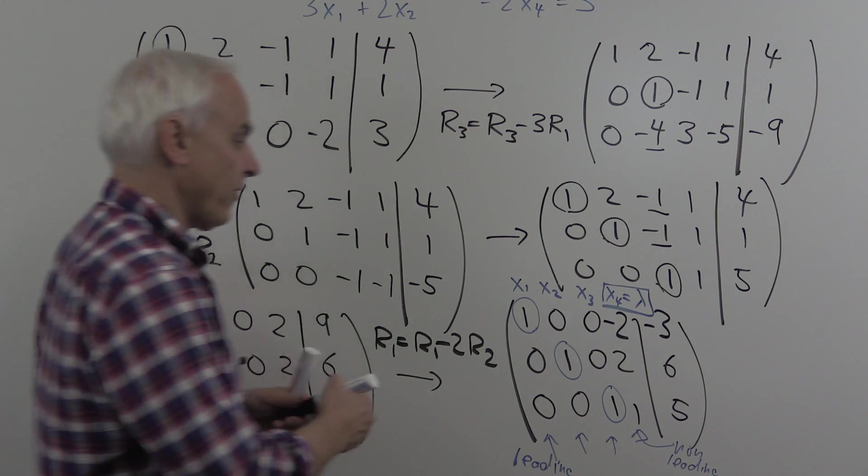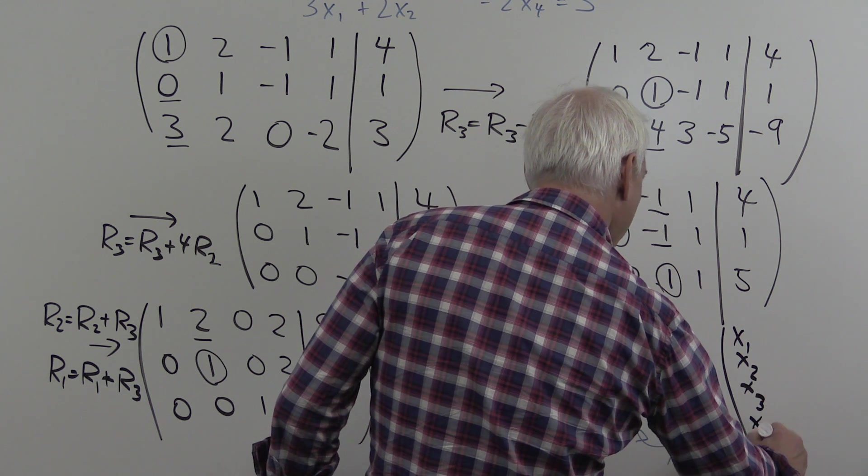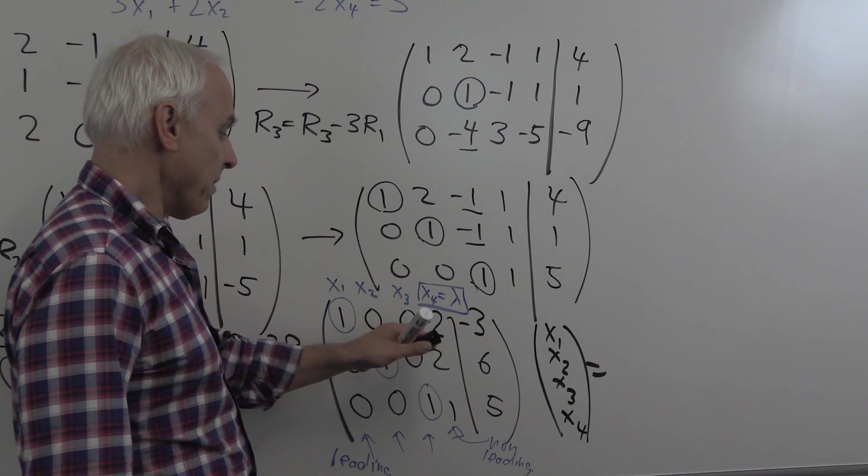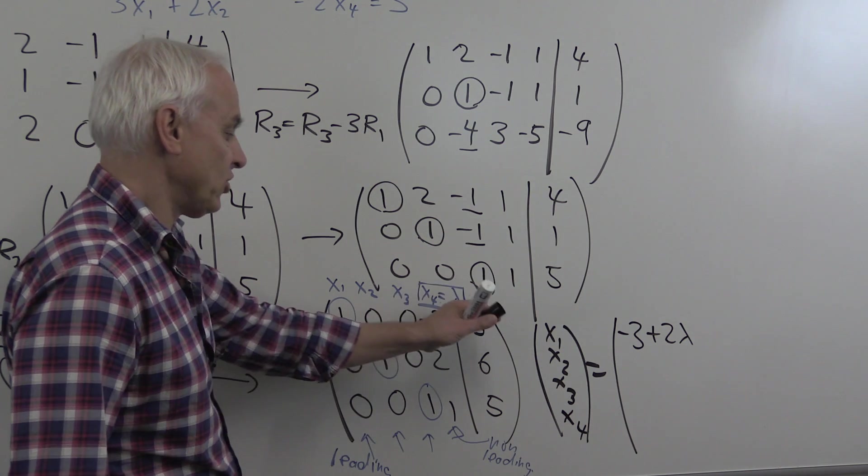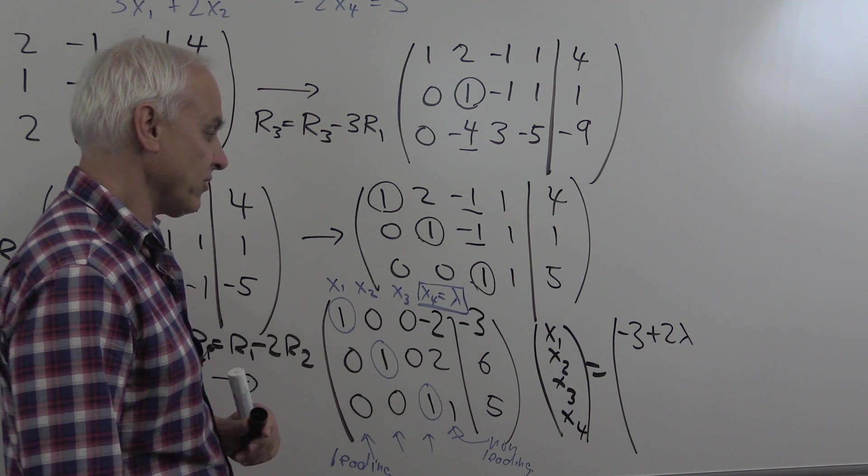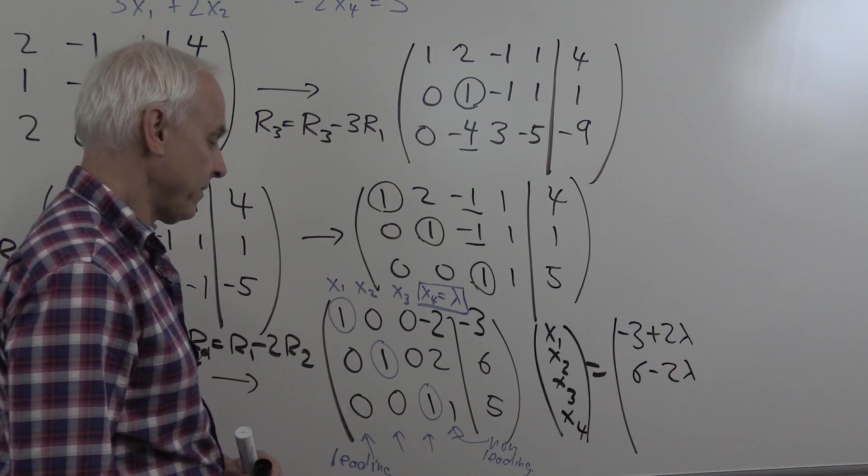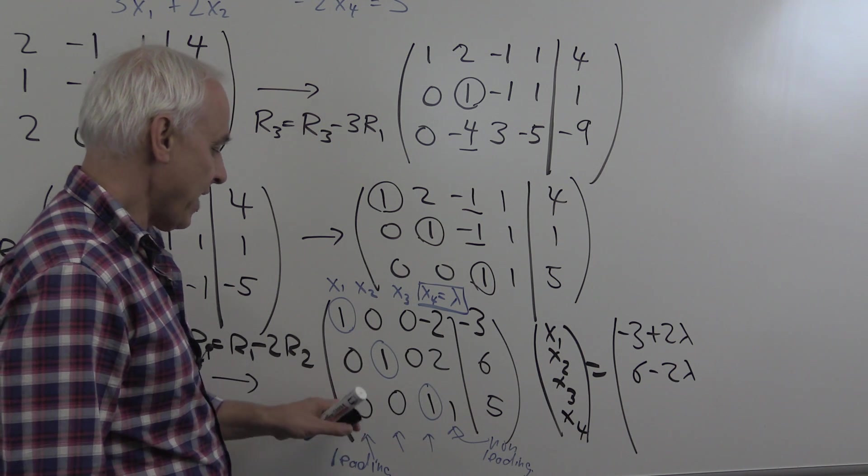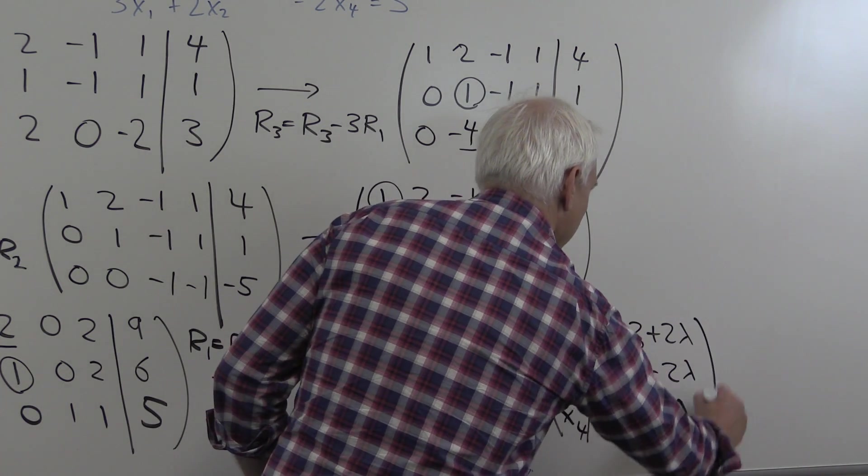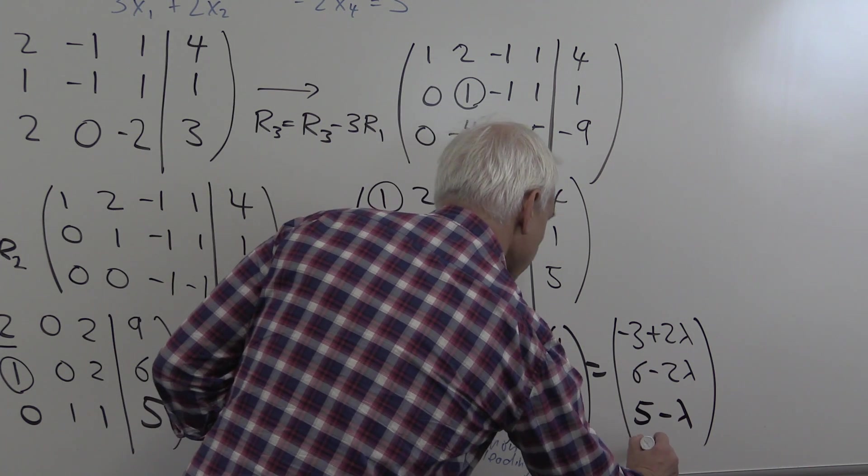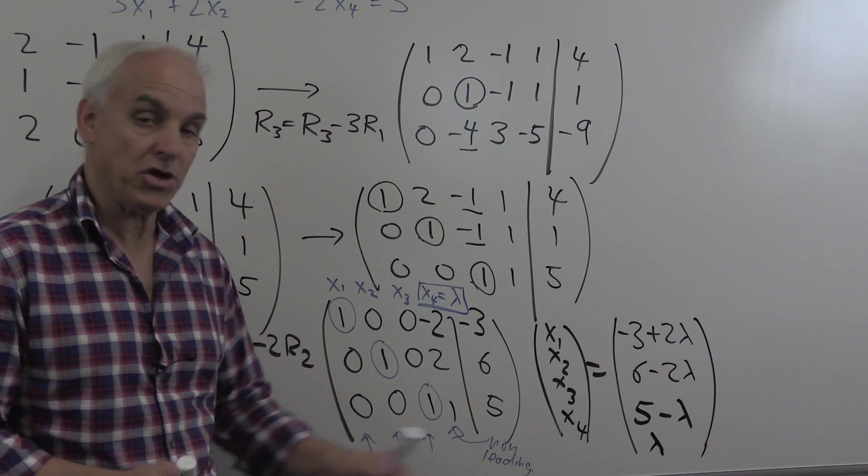In terms of those other ones, we can write that x1, x2, x3, and x4 is: x1 will be minus 2 lambda minus 3. So I'm going to write that as minus 3 minus 2 lambda. I'm just bringing the minus 2 lambda over to the other side. That's x1 equals minus 3 minus 2 lambda. Then the next equation reads x2 equals 6 minus 2 lambda. x4 is lambda, so we bring that to the other side. And finally, x3 equals 5 minus lambda. And x4 is lambda. Can't forget that one either.